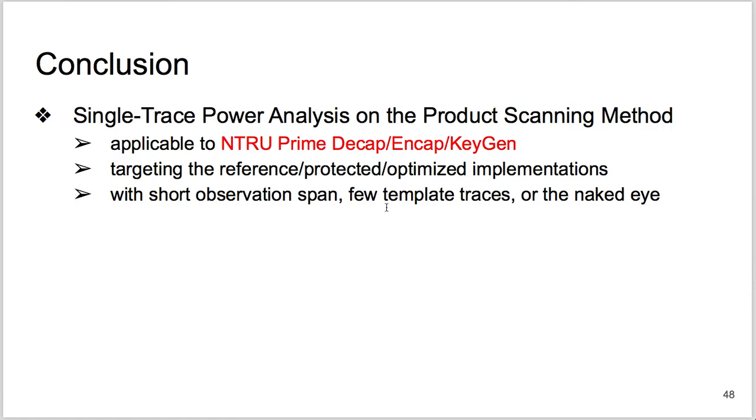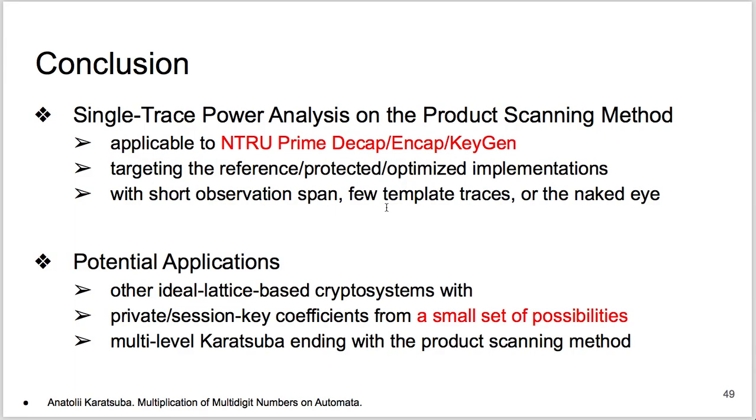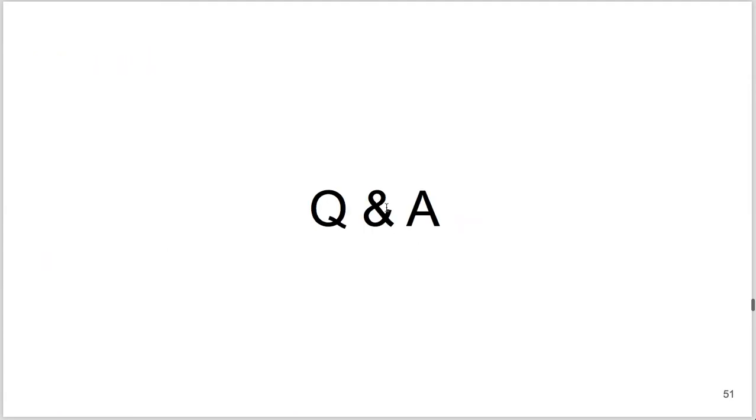To summarize, we propose three single-trace power analysis methods against product scanning. We apply them to the reference, optimized, and protected implementations. Here, we use streamlined NTRU Prime decapsulation as the concrete target. But overall, NTRU Prime decap and encap, and key generation of NTRU LPrime contain the operation of interest. Our methods may work for other ideal lattice cryptosystems, if their secret coefficients also come from a small set of possibilities. As for other ideal or advanced multiplications, our methods may apply to the multi-level Karatsuba ending with product scanning. Thank you for your listening.